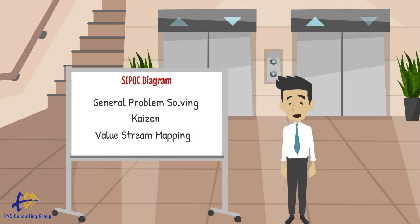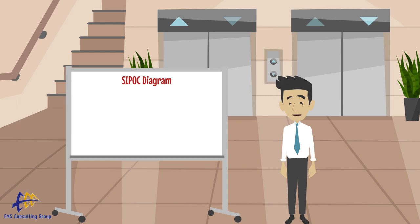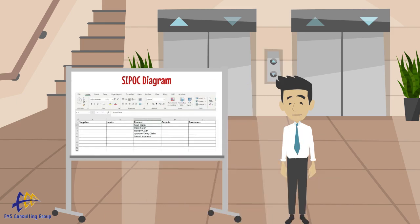A SIPOC can be done using a simple spreadsheet or it can include a flow chart in the process section. We recommend beginning with the process steps and listing them in time order from top to bottom under the process label.